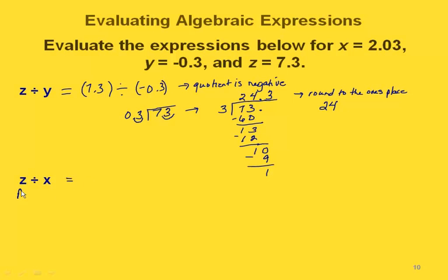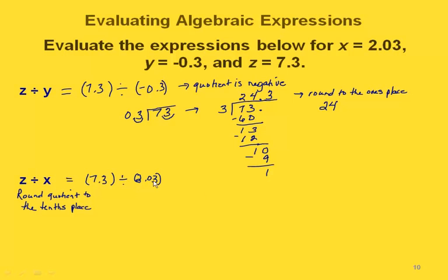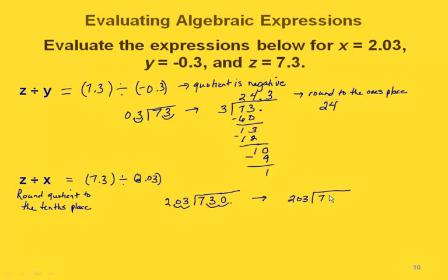Now let's do z divided by x and round our quotient to the tenths place. We replace z with 7.3 and x with two point zero three. Since our divisor is not a whole number, we move the decimal point two places in each. The decimal point goes right there and we have to put another zero in there. Rewriting, we have 203 on the outside and 730 on the inside.